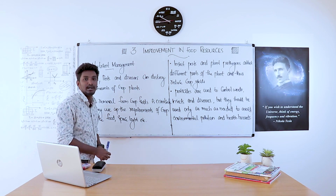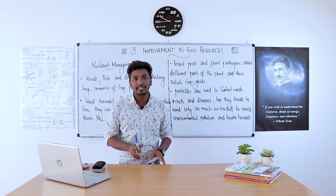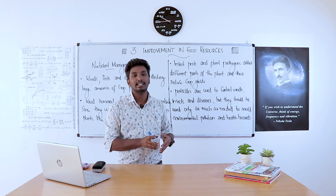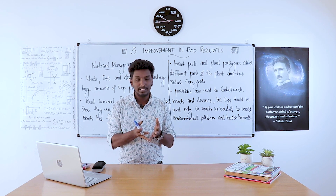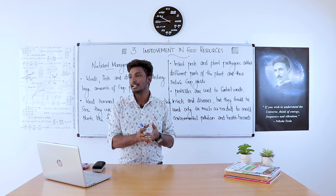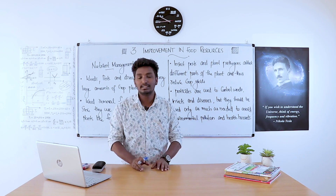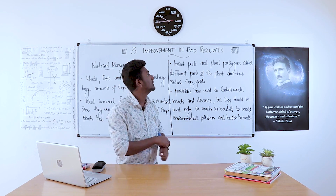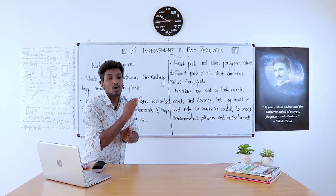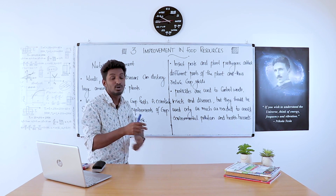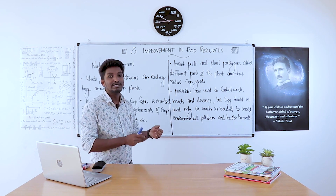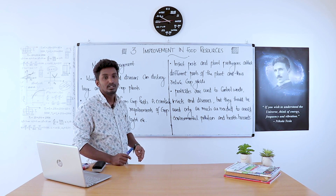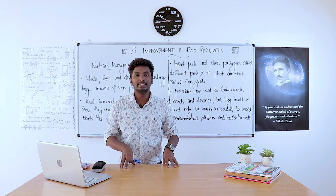That's about nutrient management. In this chapter on Improvement in Food Resources, we discussed cattle farming, beekeeping, fish rearing, and poultry — all topics about how we gain food resources. We also covered how we can improve crop yields, and topics like manures, fertilizers, crop management, and nutrient management.